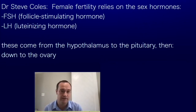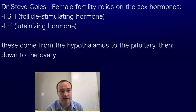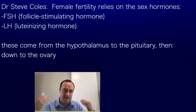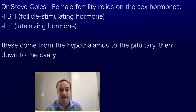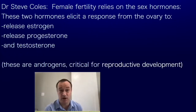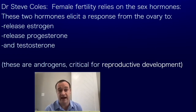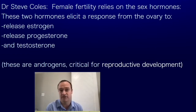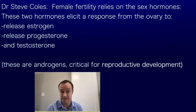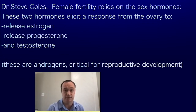FSH and LH go to the ovary and then elicit a response of releasing estrogen or progesterone. The androgens, testosterone, progesterone, and estrogen are related and they function in different areas in the body differently. But the ovary in particular releases a large amount of estrogen and also a large amount of testosterone in the female body as well.